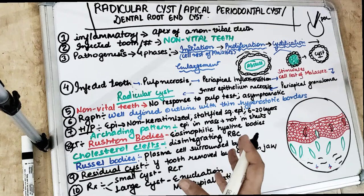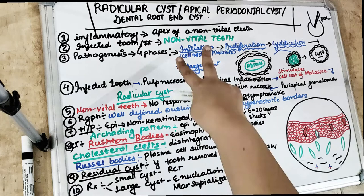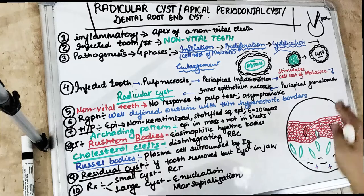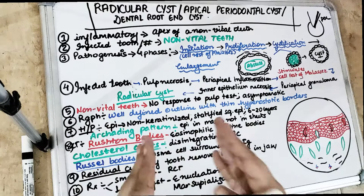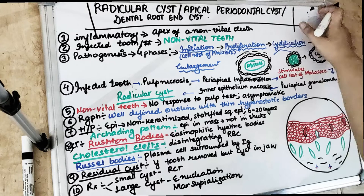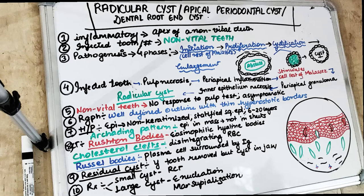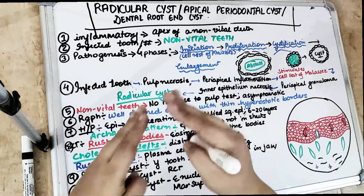This is a cyst which is present at the root end after pulpal inflammation. Whenever the tooth is non-vital, meaning the tooth is dead, the pulp — which has nerves and blood vessels and is the living part of the tooth — gets invaded by infection. This leads to destruction of blood vessels and nerves, making the tooth non-vital. An infected tooth, tooth fracture, or improper restoration leading to a non-vital tooth can develop into a radicular cyst.